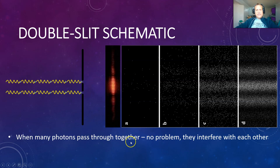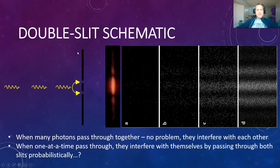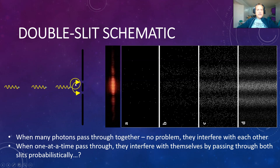When many photons pass through, that's no problem to understand — you just say they interfere with each other, just like a water wave does. So even though they're particles, there are so many of them that they're just interfering with each other — no problem. But the problem is when one photon at a time passes through, they still interfere with themselves. How? The idea they came up with — following on from Einstein, who said that a photon can do two different things at the same time — is that a photon then goes through both slits at the same time, probabilistically.